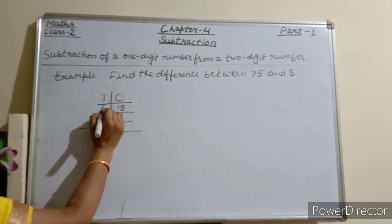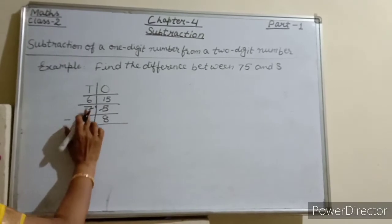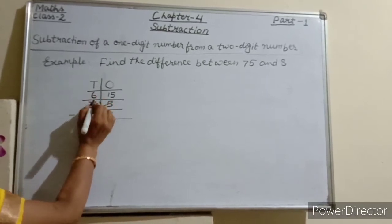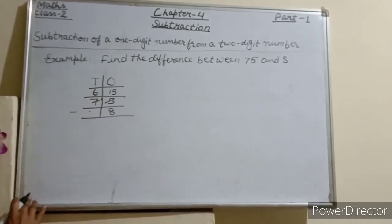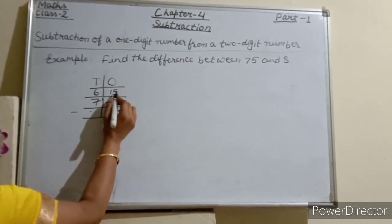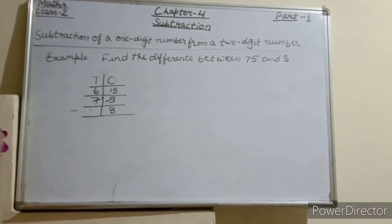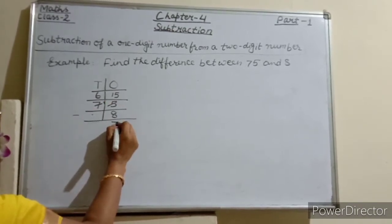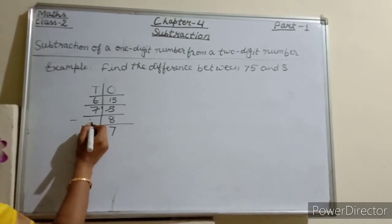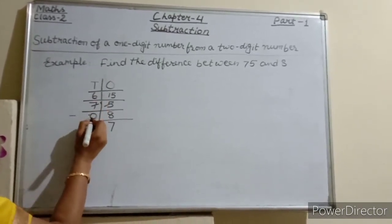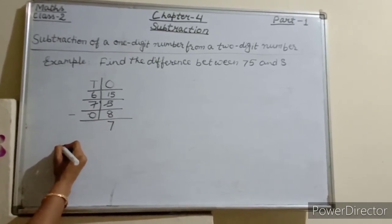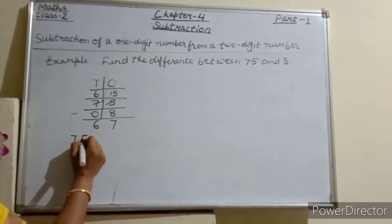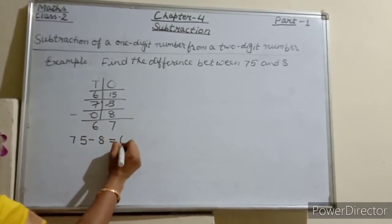Now find the difference: 15 minus 8 equals 7. Write 7 in the ones column. For the tens: 6 minus 0 equals 6. Write 6 in the tens column. So 75 minus 8 equals 67.